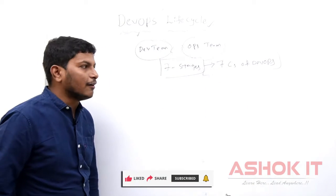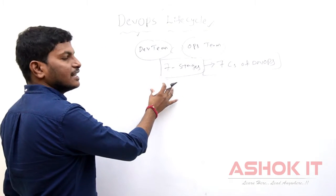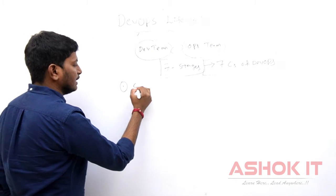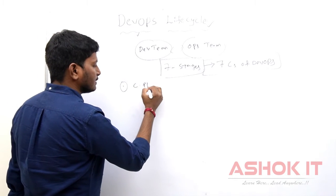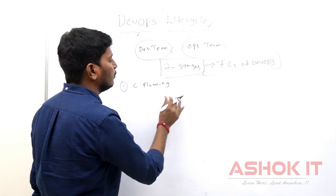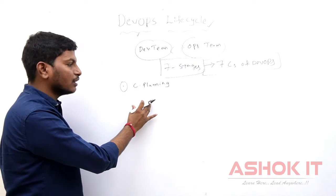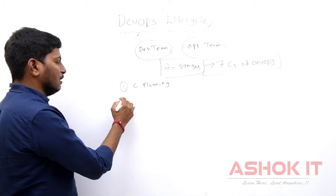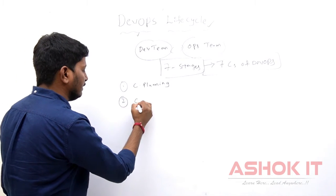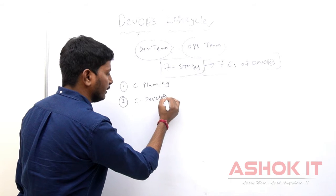These seven stages are also called the seven C's of DevOps. The first one is continuous planning — what we want to develop and what we want to deliver, we have to plan it first. Once planning is completed, then continuous development is required.